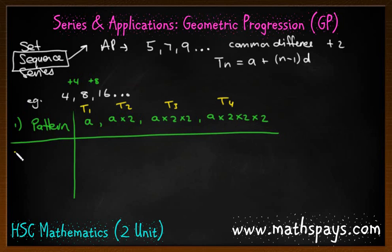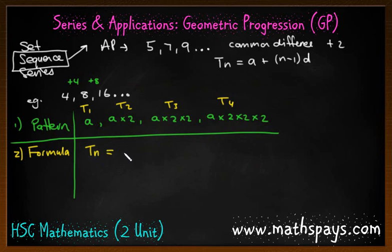That's a bit more of a generalized approach. Once we did that last time, we then looked at the formula approach because if we want to find the 50th term, it's going to require a lot of times-2s and that's going to get quite time-consuming. So let's come up with a nice little formula. We've got Tn equals a, and we're then multiplying by these times 2s: that's times 2, times 2 squared, times 2 cubed.